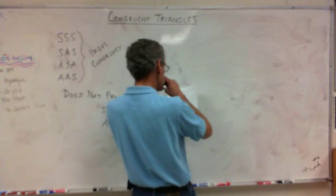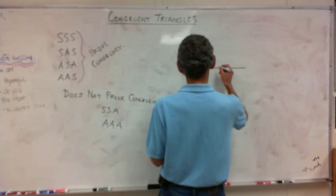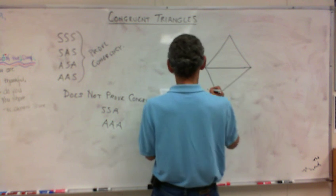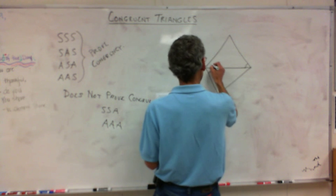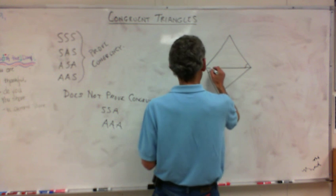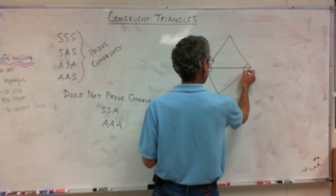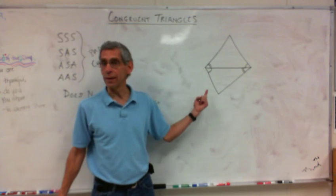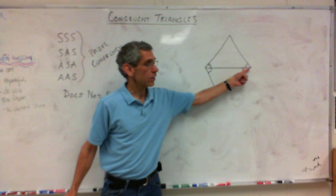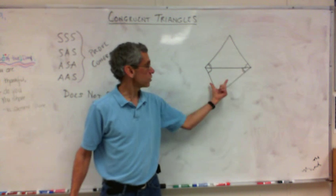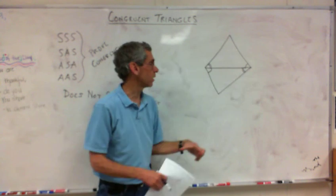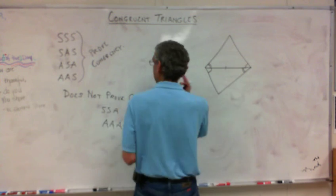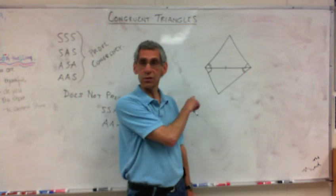How about another example? What if I gave you something like this? What else do I know is the same? Those two triangles are sharing the side — this triangle has the same side as this triangle, right there. So I have angle, side, angle. Yes, that's congruent. Angle, side, angle — you're starting to get it.